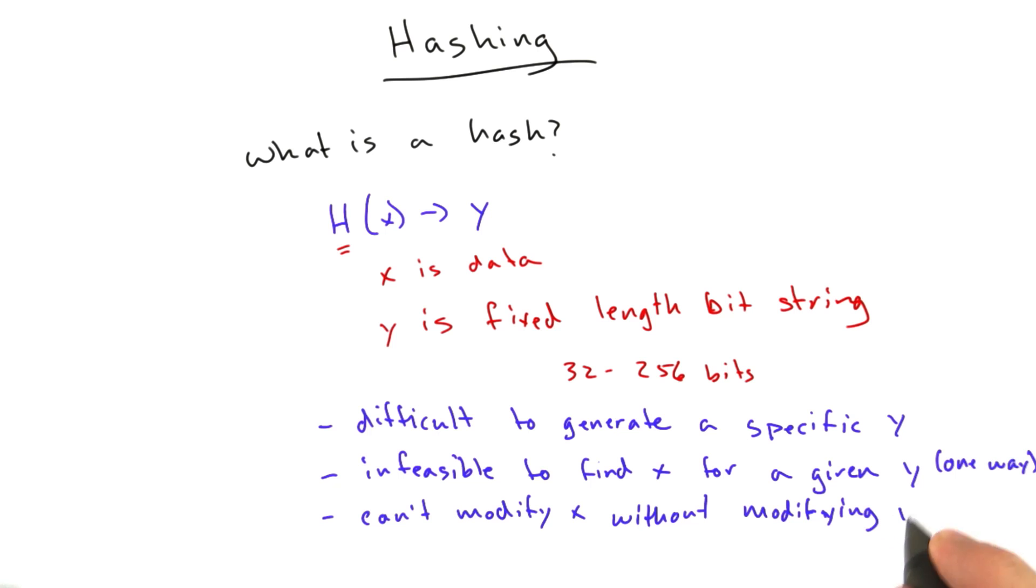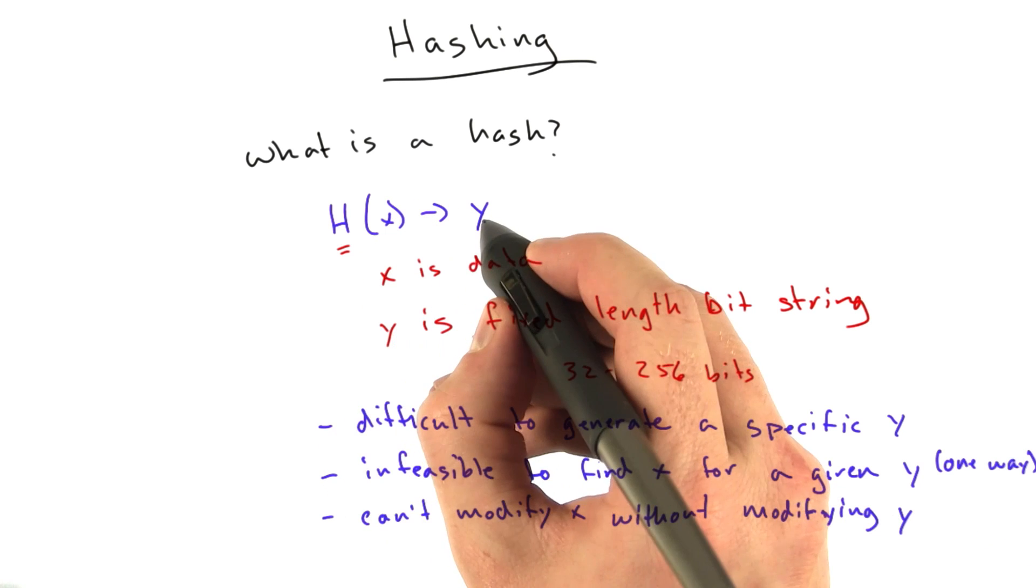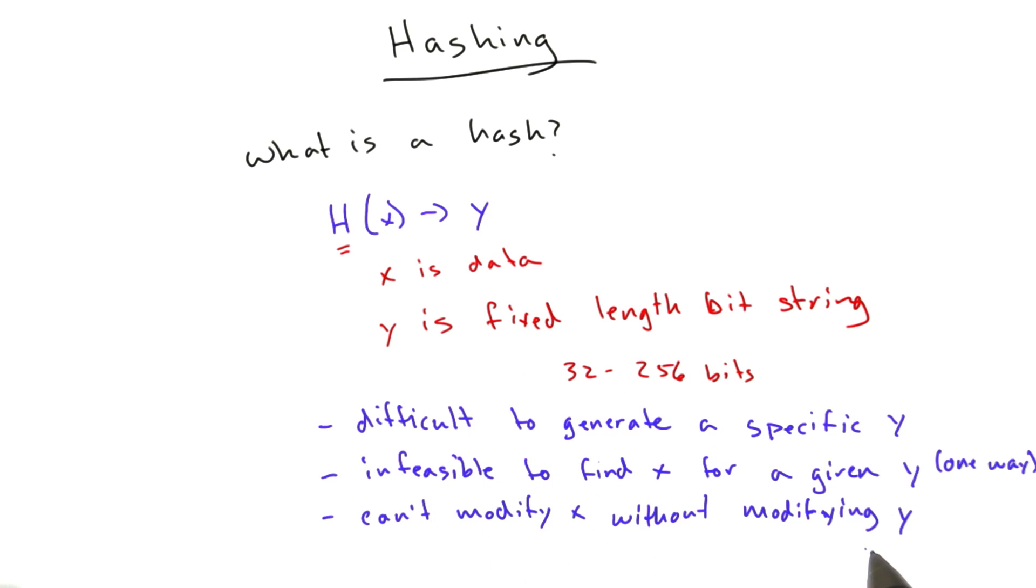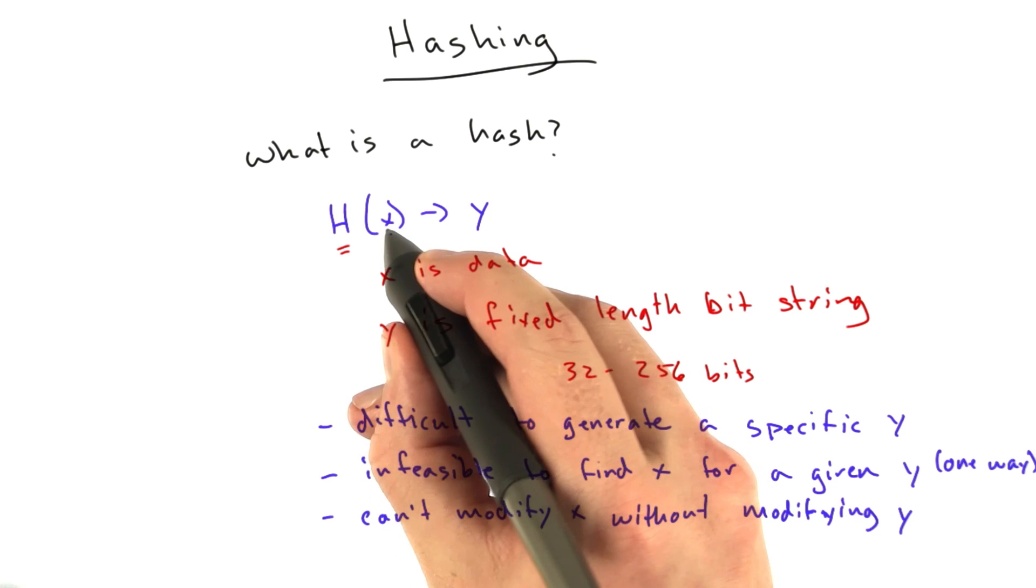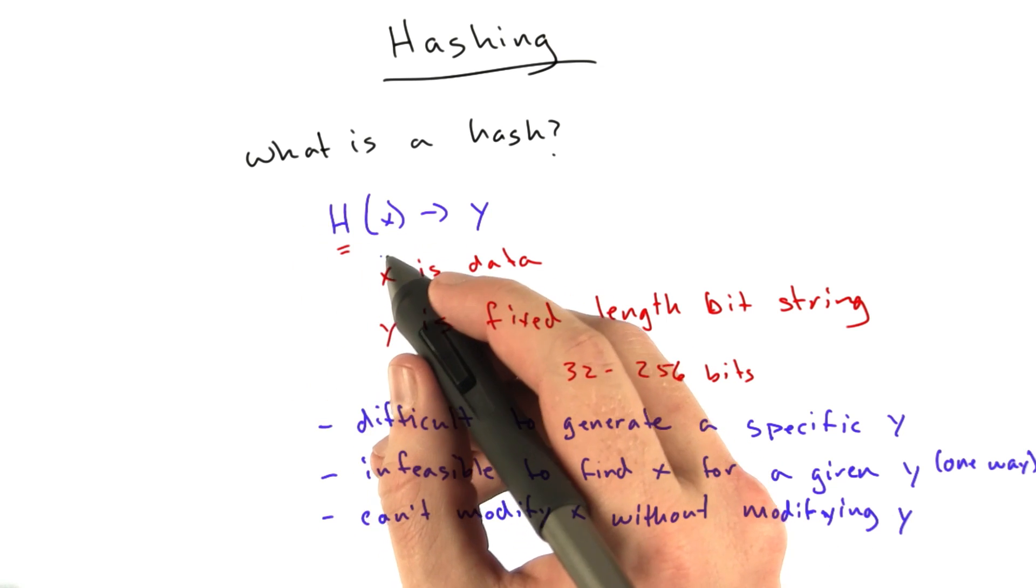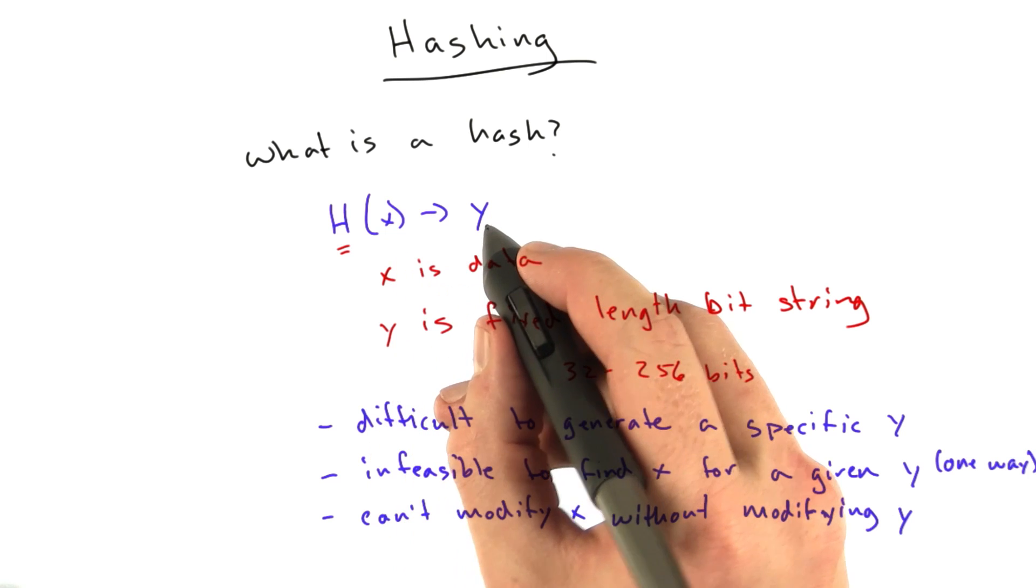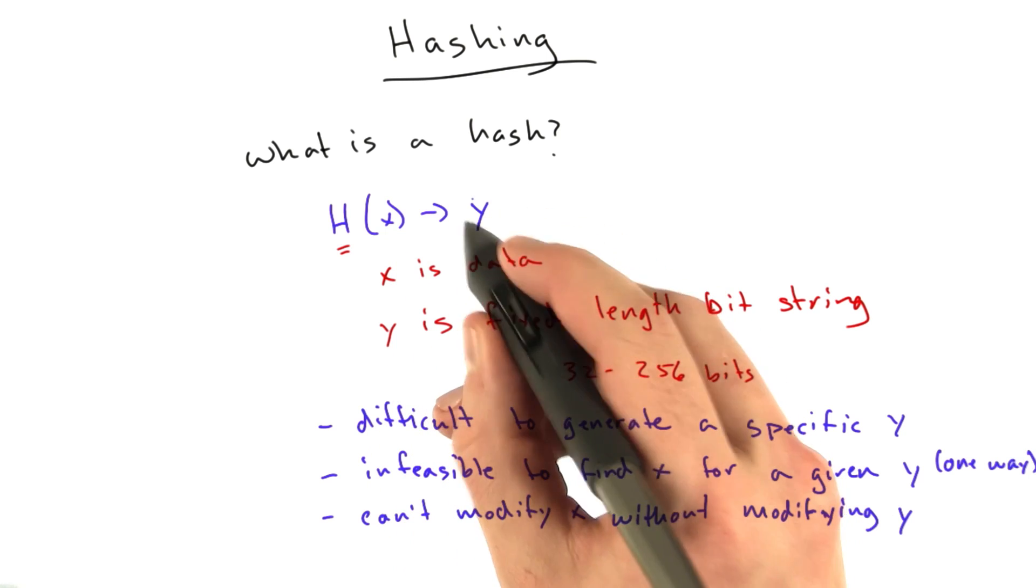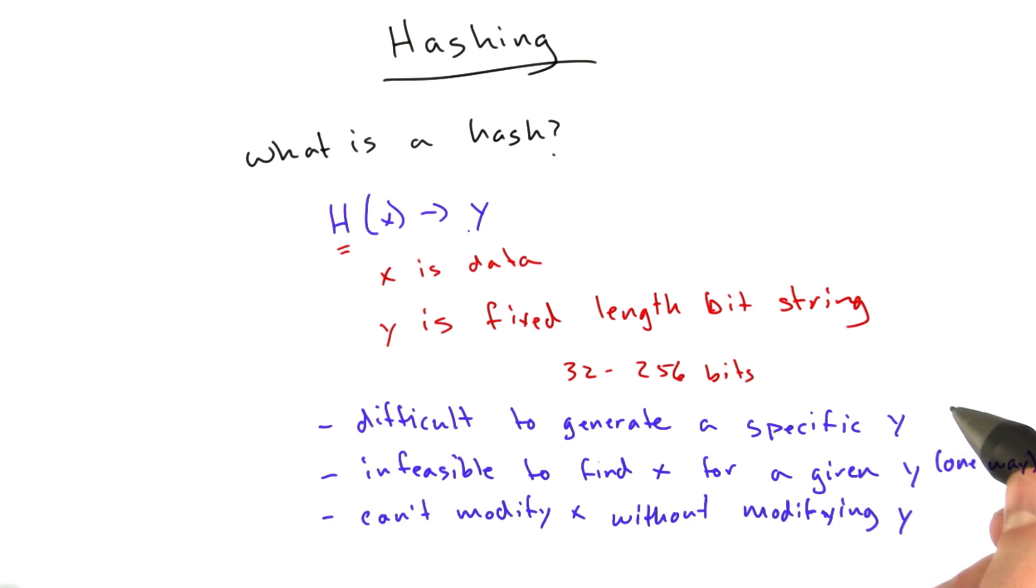Another property of a good hash function is you can't modify x without significantly modifying y. And generally, if you just change one bit in x, which could be thousands of bytes long, you want y to be completely different. And again, this kind of hinges on some of these other properties as well.